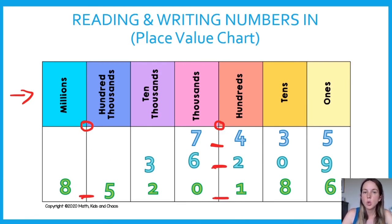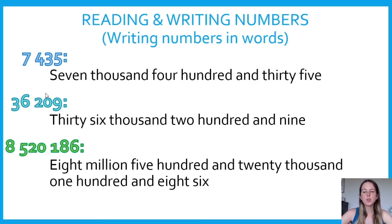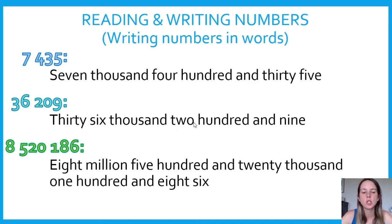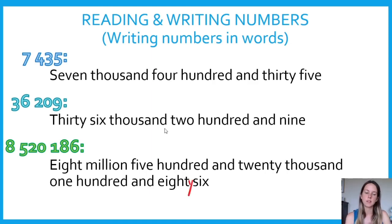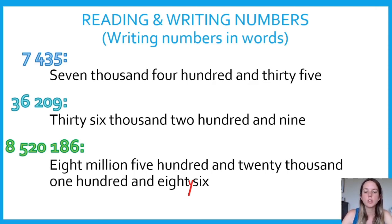Even though you can read numbers, you also need to know how to write them. I'm going to use the same numbers and show you how they're written out in words. The first one is 7 435, the next number is 36 209, and the last is 8 520 186. Note: there's a correction — it should be 86 at the end.